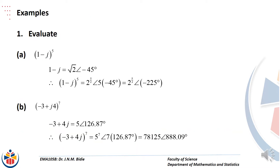Let's do some examples based on powers as well as roots. Starting with number 1: we've got the fifth power of (1 − j). The first thing we do is change to polar form. r is the square root of 2 and the calculator gives negative 45 degrees, which is correct — it's in the fourth quadrant because x is positive and y is negative.